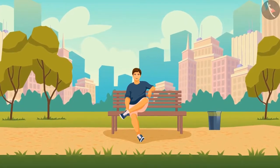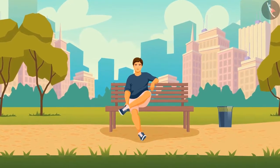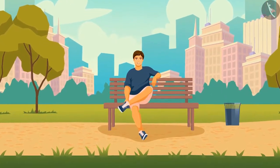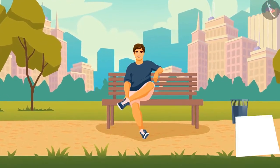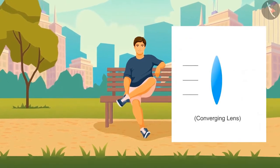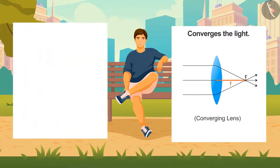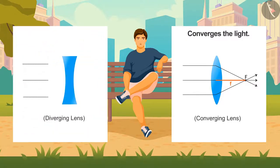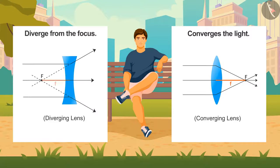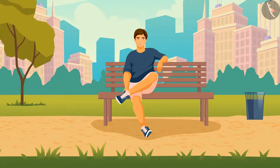But the lens has two foci, so how will we assign the sign? We know that a convex lens, after refraction, converges the light onto the focus, which is on the right side of the lens. This focus acts as the principal focus in the case of a convex lens, so the focal length is taken as positive. Conversely, in the case of a concave lens, the light after refraction appears to diverge from the focus, which is on the left side of the lens. Hence, the focal length is taken as negative in this case.